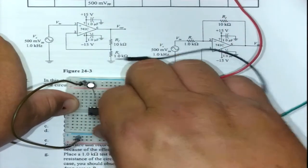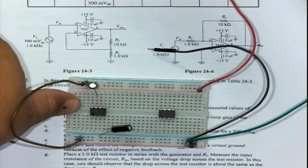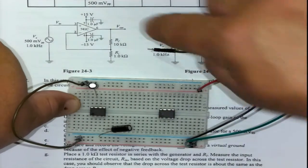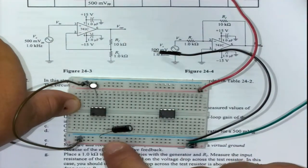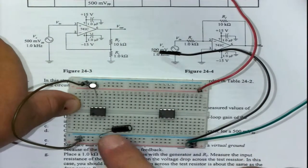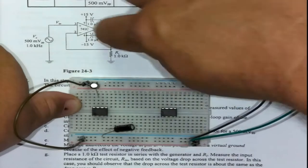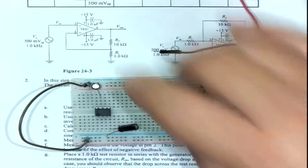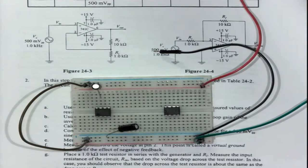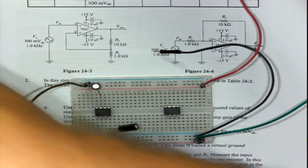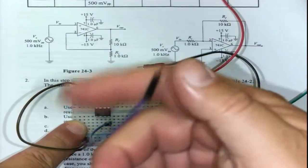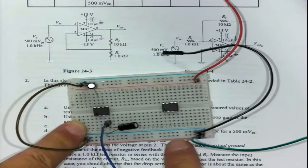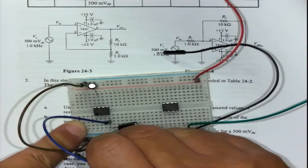Plus going to ground, minus going to pin 4. If I do it like this, then you've done that capacitor. And now we need to connect pin 4 to minus 15 volt.